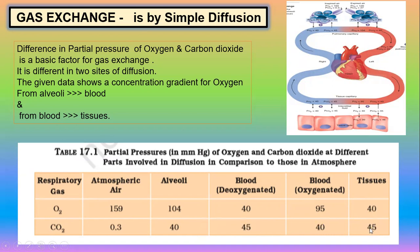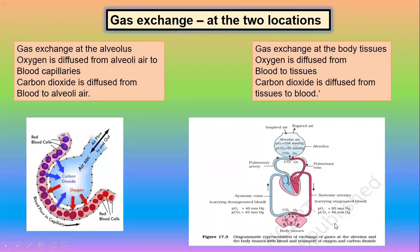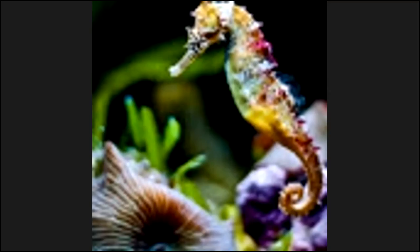Carbon dioxide is diffused from tissues to blood. Gas exchange takes place in two places: in the alveoli and in the tissues. In the next class, we will study the transport of oxygen and carbon dioxide. Thank you.